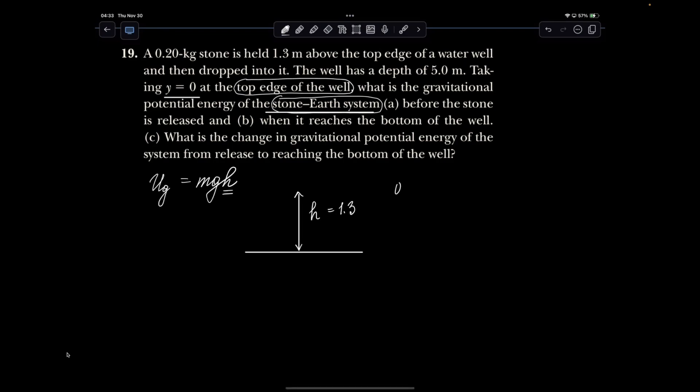I'm going to do 0.2 times 9.8 times 1.3. And that will be my answer to A, which is the energy that gets me 2.55 joules. But technically, it's just two sig figs, so I'm going to say 2.5 joules.